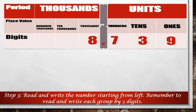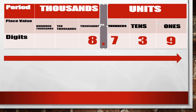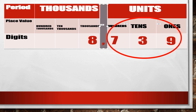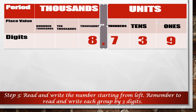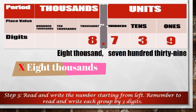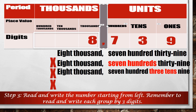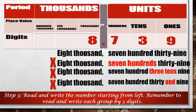Step 3: To read and write numbers separated by commas, we start from the left and read each group as a 3-digit number, followed by the value of the group. So for this number, we start from the left and read 8,739. Note that we use the singular form — so we say 8,000, not 8,000s; 7,000, not 7,000s; and we say 30 instead of 30s. Finally, we do not say or write 'and' in whole numbers, such as 7,000, 30, and 9.